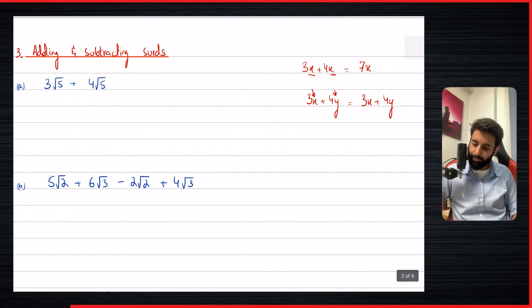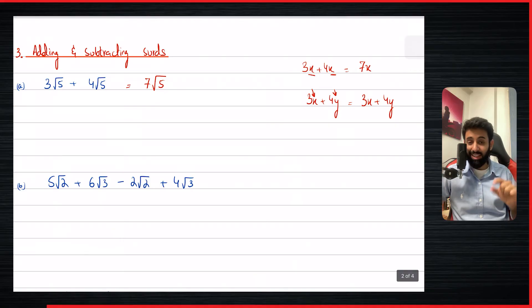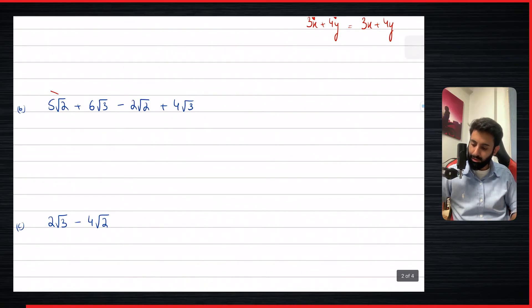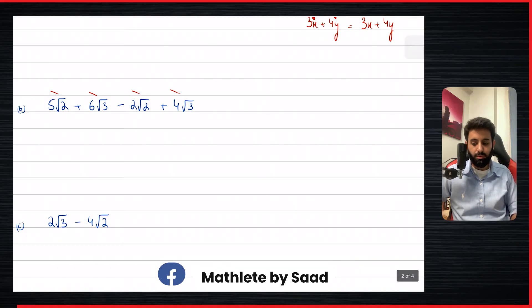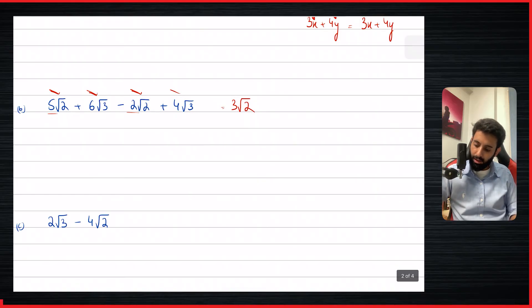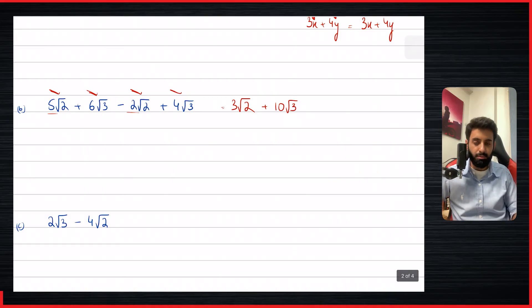So applying that concept: three root five plus four root five can be added very easily — we get seven root five. Remember, the number inside the square root remains the same; you don't add the numbers inside the square root. Let's try another example: five under root two plus six under root three minus two under root two plus four under root three. Five under root two and two under root two can be simplified — since there's a minus sign, five minus two is three under root two. And six under root three plus four under root three becomes ten under root three. That's your answer.